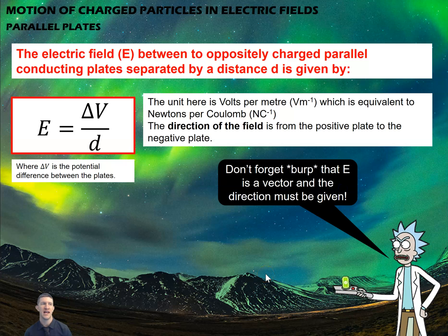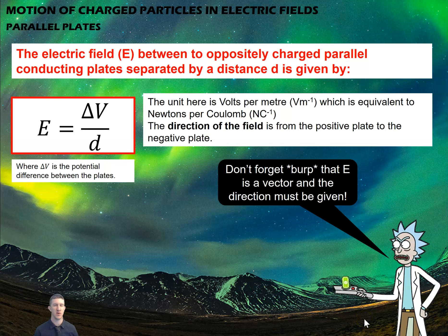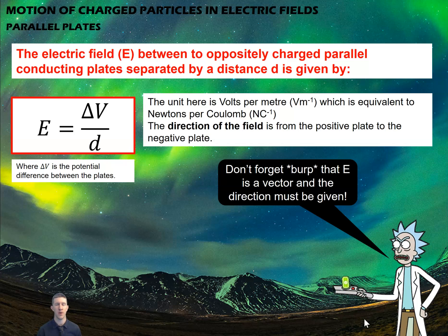This is an important definition to know. The electric field between two oppositely charged parallel conducting plates separated by distance d is given by E = ΔV/d — the potential difference between the plates divided by the distance between them. The units are volts per meter, since ΔV is in volts and distance is in meters. The direction of the field is from the positive plate to the negative plate. Don't forget that the electric field is a vector, so when reporting E you must also give its direction.